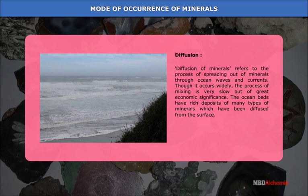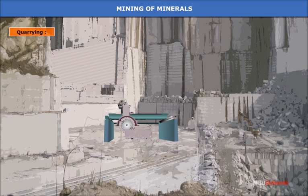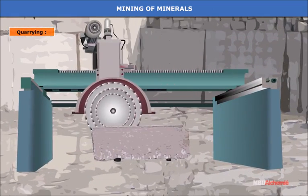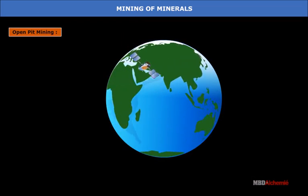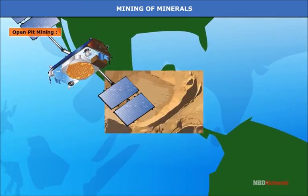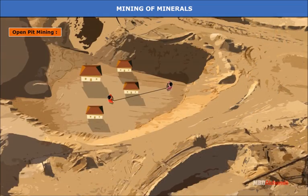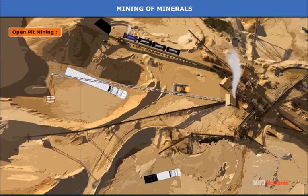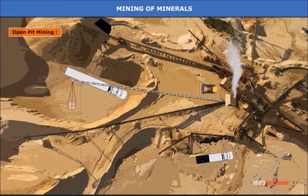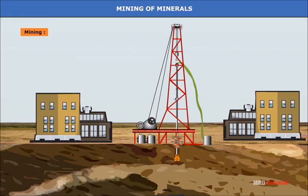The ocean beds have rich deposits of many types of minerals which have been diffused from the surface. Mining of minerals — quarrying is the excavation of minerals on the surface of the earth, done usually for extraction of stones, pebbles, and marbles for building and construction. Open pit mining, also known as open cast or strip mining, is used when mineral strata are exposed on the surface after overlaying strata has been removed. Underground deep excavation of minerals is termed mining; most fossil fuels are obtained this way, and underground mining is now most common as surface deposits have been nearly exhausted.